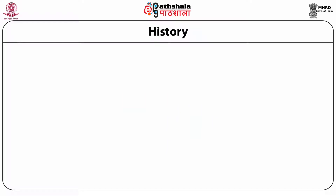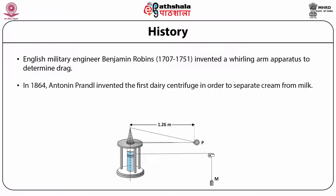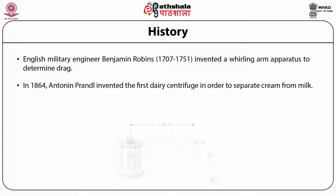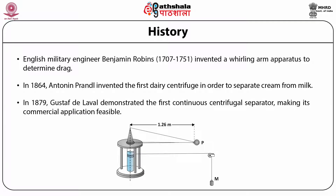Now we will discuss the history of centrifugation technology. It was first invented by English military engineer Benjamin Robbins, who invented a whirling arm apparatus to determine viscous drag. In 1864, Antonin Pandal invented the first dairy centrifuge to separate cream from milk, a technology still used today. In 1879, Gustav de Laval demonstrated the first continuous centrifugation separator and made it commercially available.